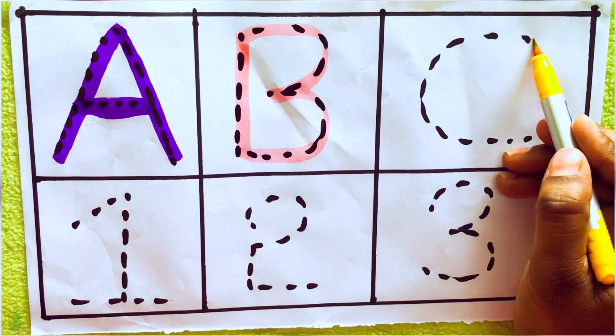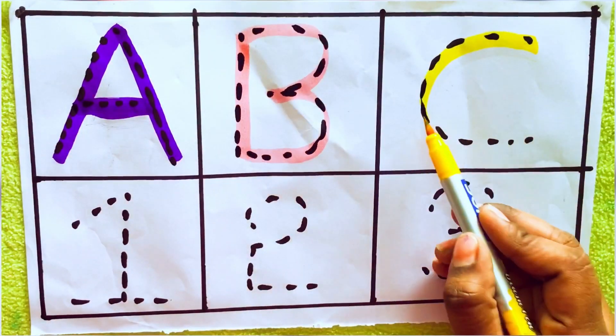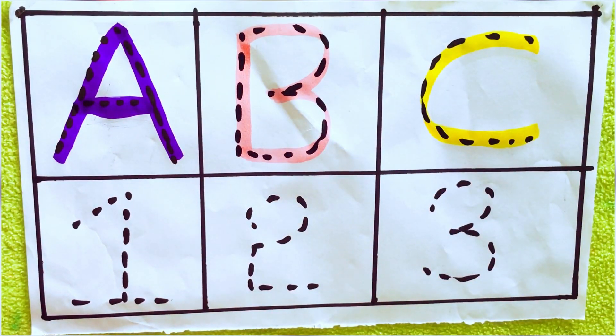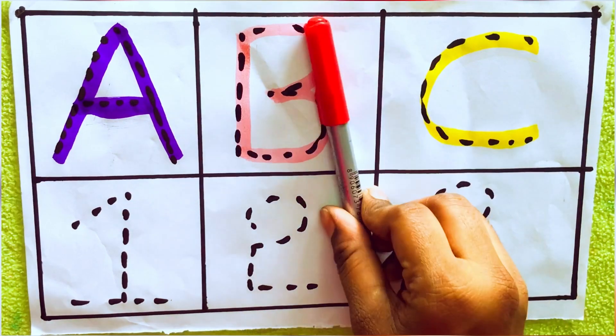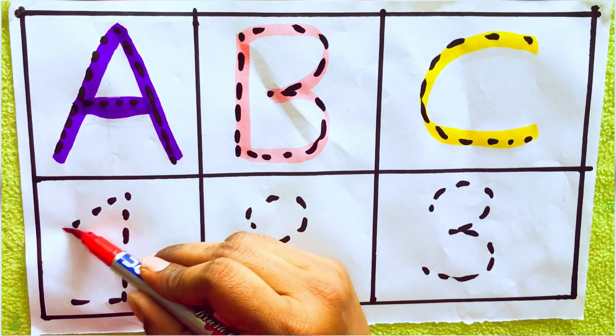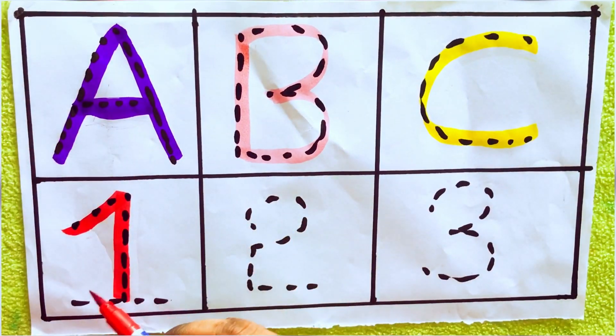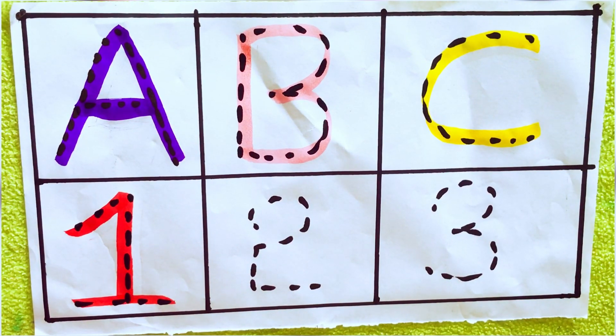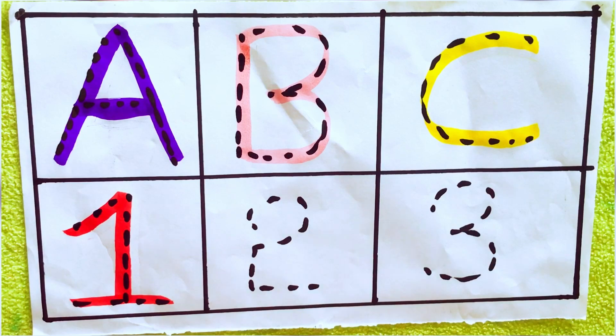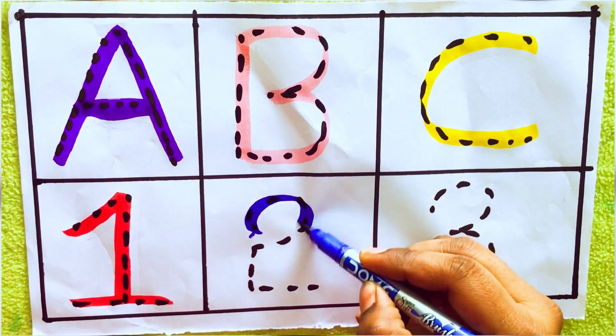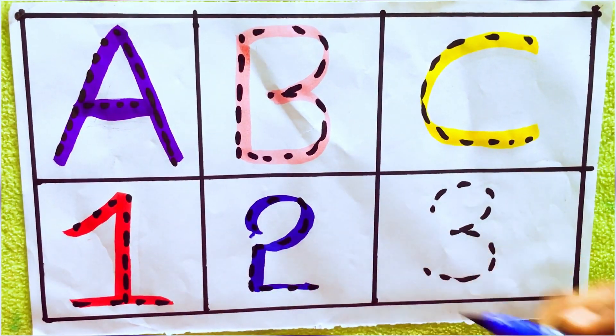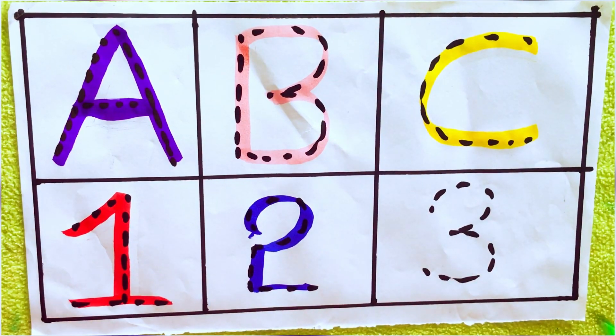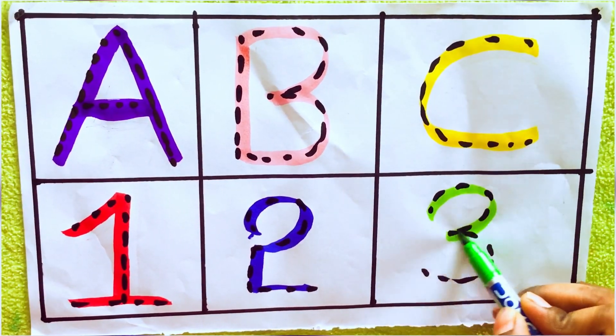Yellow color C, C for cat. Red color cat. Red color 1, O-N-E, one. Blue color 2, T-W-O, two. Light green color 3, T-H-R-E-E, three.